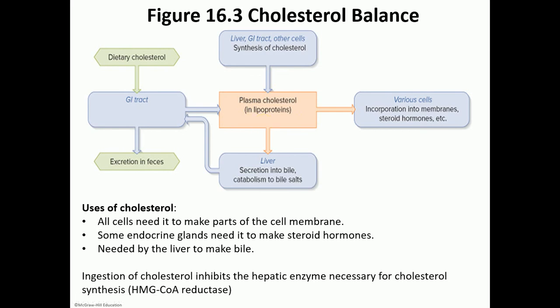We can use cholesterol to make steroid hormones or parts of the cell membrane. The liver uses it to make bile and bile salts. Any extra can be excreted in feces. Statin medications, like Lipitor, are cholesterol-lowering drugs that inhibit HMG-CoA reductase enzyme in the liver and stop the liver from making its own cholesterol — but they would be useless if the patient does not decrease their dietary cholesterol intake.